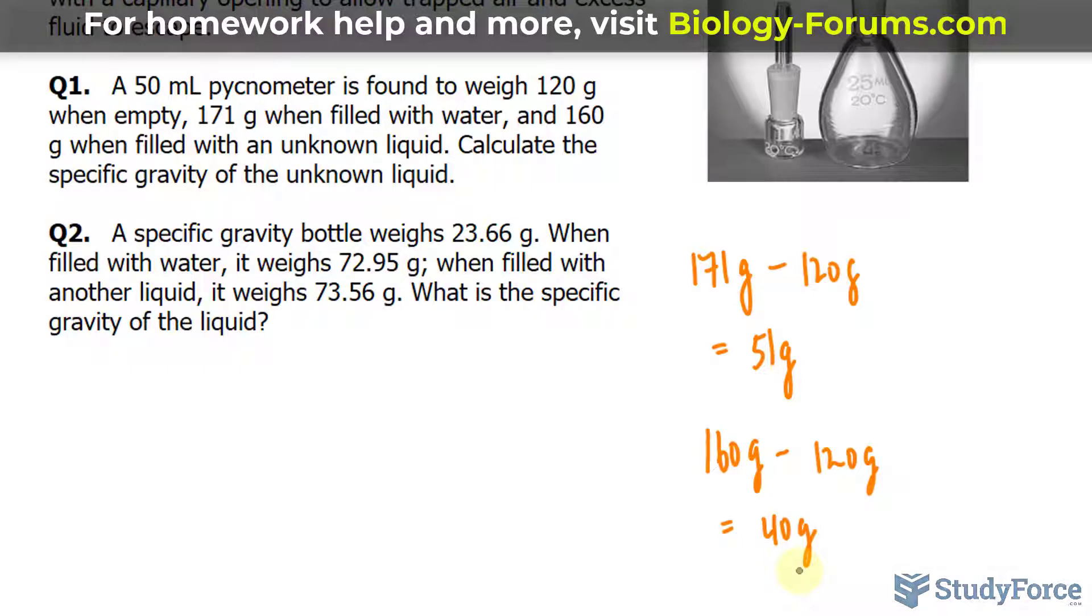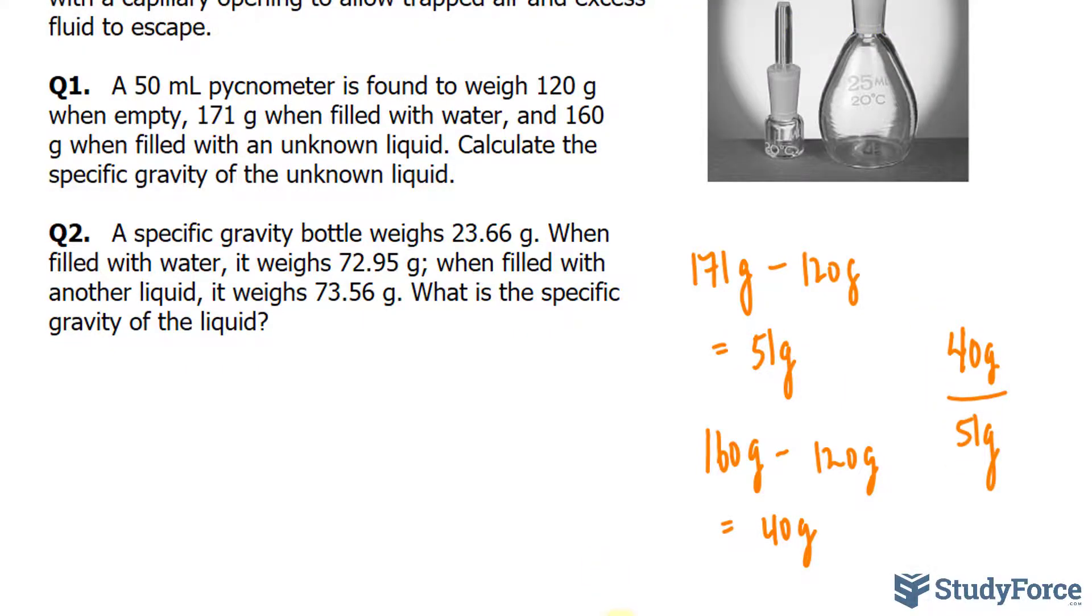As I mentioned earlier, to calculate the specific gravity, you take the mass of the substance, which is 40 grams, divided by the weight of equal volume of water, which is the 51 grams. Let's use our calculator from here.